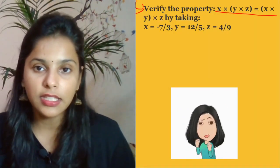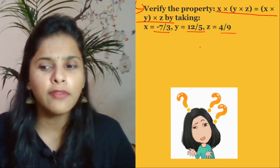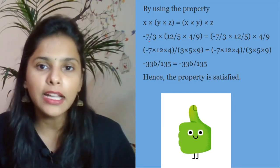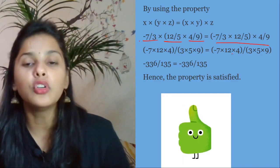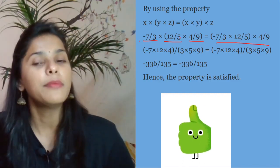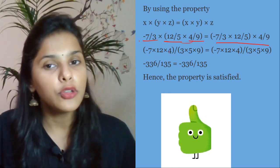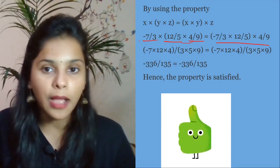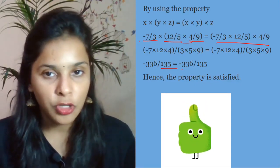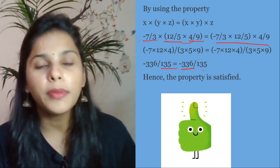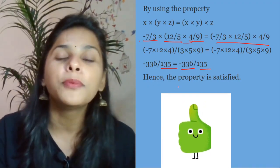Next question: verify the given property. Substitute the given values of X, Y, and Z into both LHS and RHS. Solving the LHS: multiply the relevant terms and you get 7, 12, 4 in the numerator and −3, 3, 6 in the denominator — giving 135. Similarly for RHS, numerator multiplication gives 3, 3, 6 and denominator gives 135. LHS equals RHS, so the property is satisfied. Hence proved.